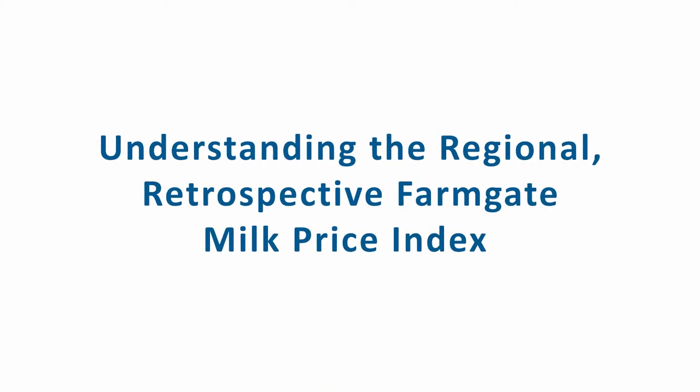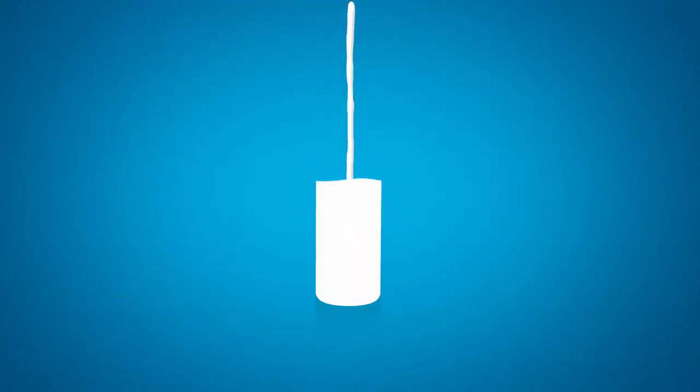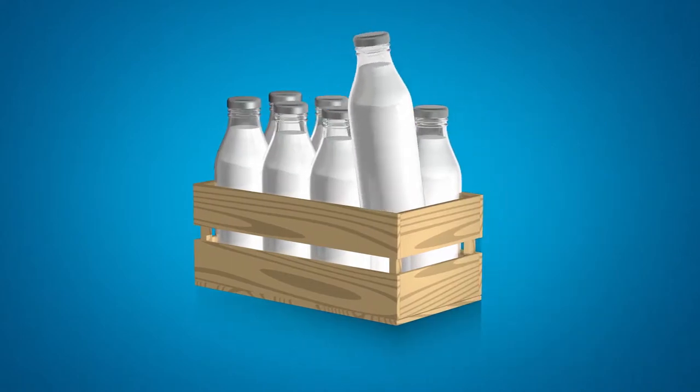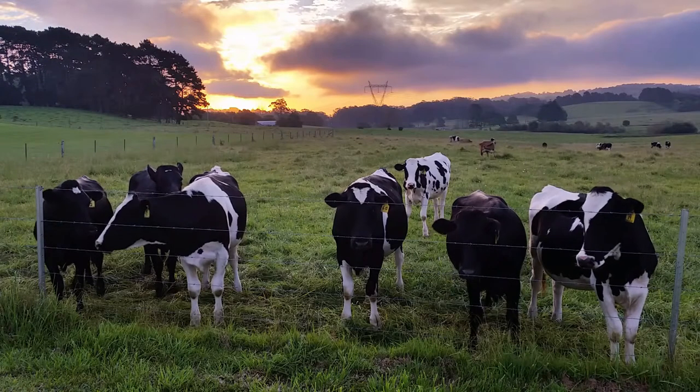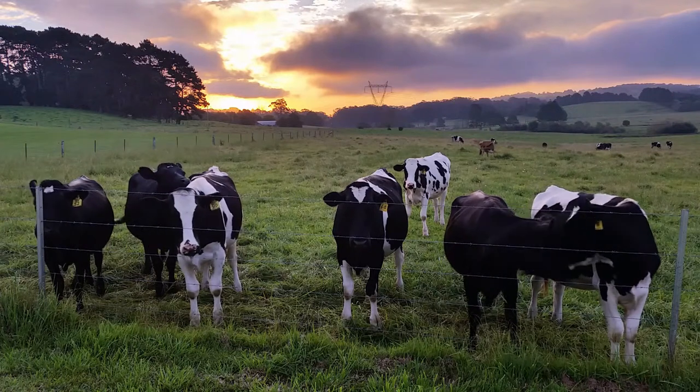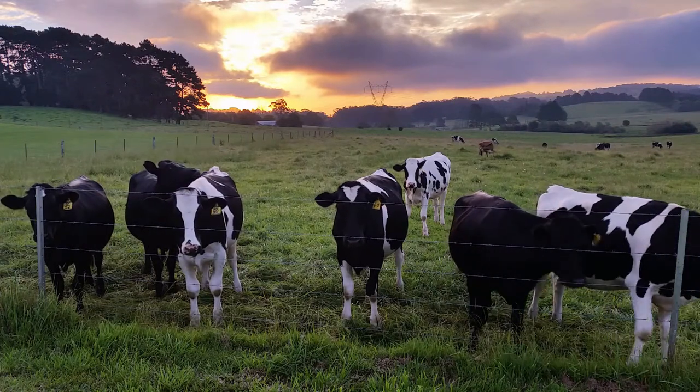Understanding the Regional Retrospective Farmgate Milk Price Index. The Regional Retrospective Farmgate Milk Price Index reports average farmgate milk prices in the eight dairy regions across Australia. The index will help farmers compare the price they are receiving with the average milk price within their region.